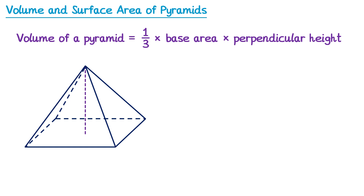So let's take a pyramid and add some dimensions and work out its volume. We'll use the formula: volume equals one-third multiplied by the area of the base. For this one the base is a square which is 6 by 6, so its area is 6 times 6, and then multiplied by the perpendicular height, which for this one is 5, so multiplied by 5.